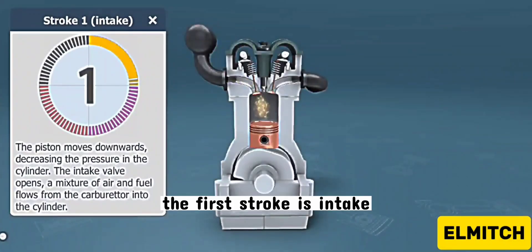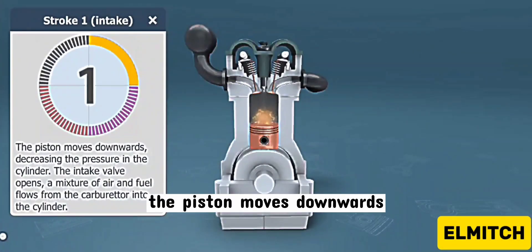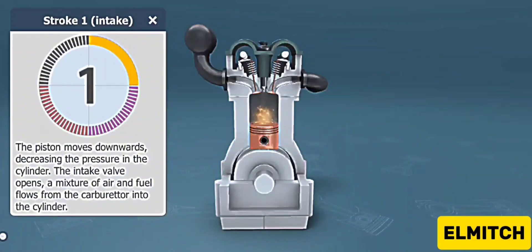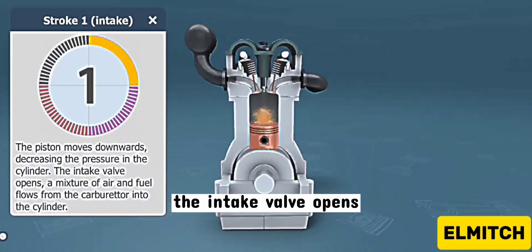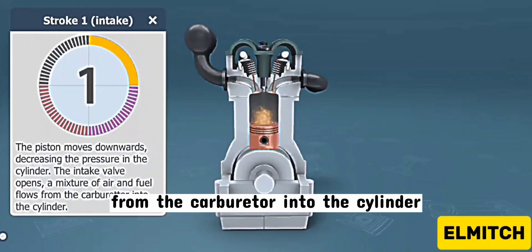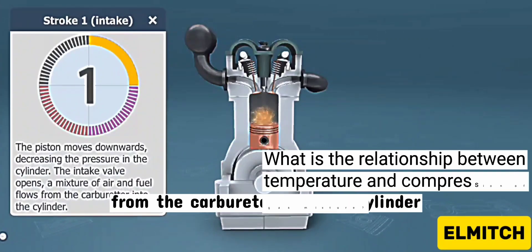The first stroke is intake. The piston moves downwards, decreasing the pressure in the cylinder. The intake valve opens and a mixture of air and fuel flows from the carburetor into the cylinder.